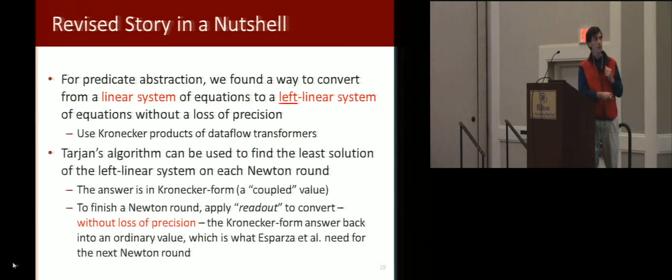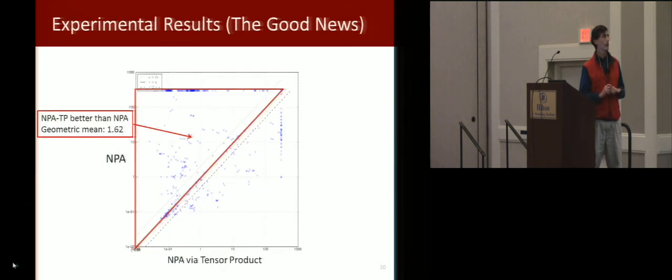It's Kronecker products of data flow transformers. Then we can use Tarjan's algorithm on each round to find the answer. The answer is in Kronecker product form. It's a coupled value. To finish the round, we apply readout. And then without loss of precision, we get the value back that Esparza et al need.